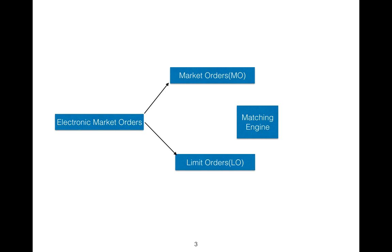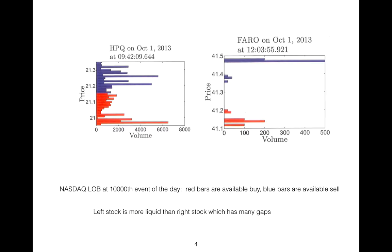Let's jump in on what we call electronic market orders. We have an order book, and we just have limit orders and market orders. We have a matching engine that matches buyers to sellers. Here is the graph of two stocks from NASDAQ — limit order book. LOB stands for limit order book, at the 10,000th event of the day.